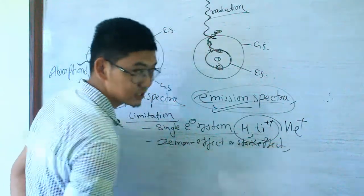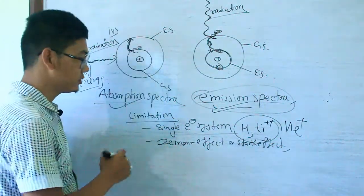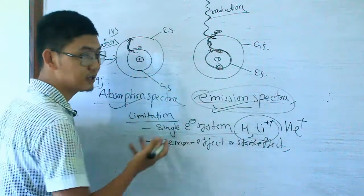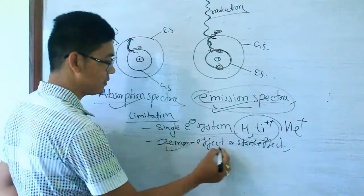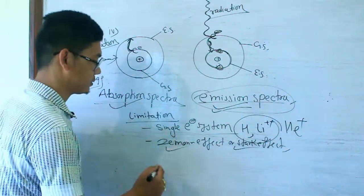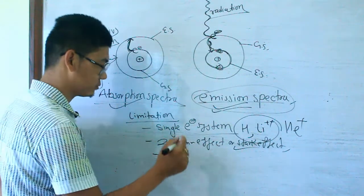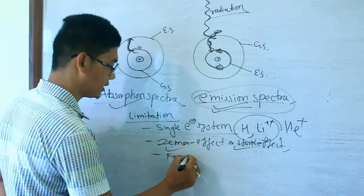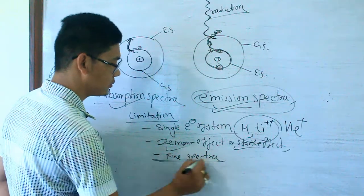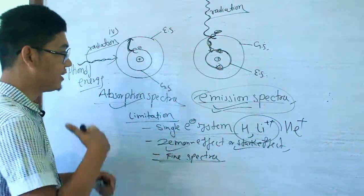Another limitation: here is the Zeeman effect and the Stark effect. If you look at the spectra in an electric field or magnetic field, you can observe these effects. Also, if you look at the atomic spectra in a fine way, it shows fine spectra — and Bohr's model is unable to explain fine spectra.